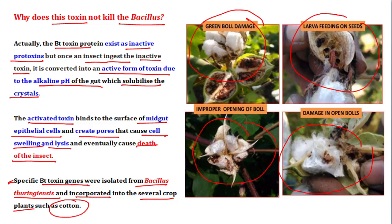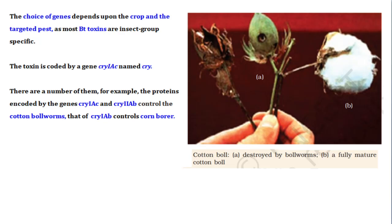The genes that we take and add to the plant — the choice depends on the crop and the targeted pest. The pest the crop needs to be resistant against determines which gene is used. Bt toxin is specific to particular insect groups. The toxic genes Cry1AC and Cry2AB are the two genes that code for proteins which kill cotton bollworms.